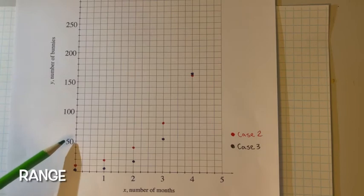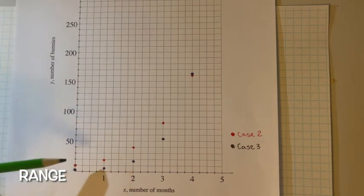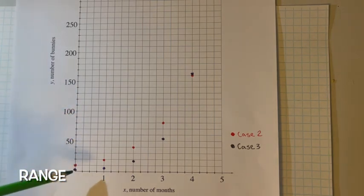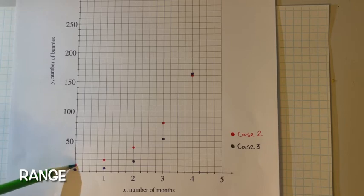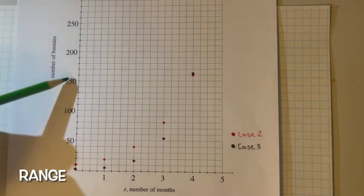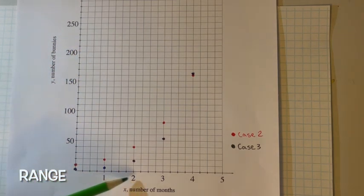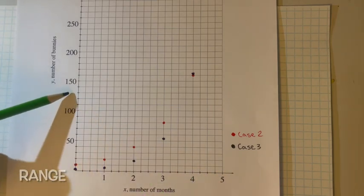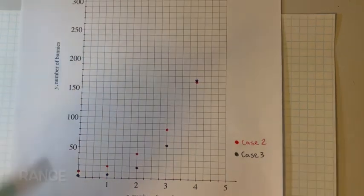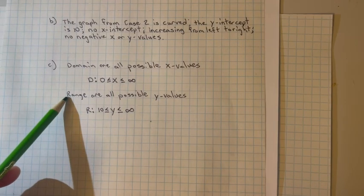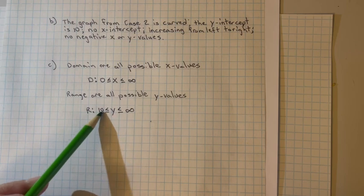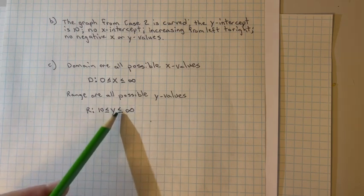The range are all possible y values. You look at the y-axis to find the range. For zero months, you have 10 bunnies. So that's the minimum. The range is y is greater than or equal to 10, and it can go infinitely on the y-axis, the number of bunnies, if you go infinitely in time. So the range is y is greater than or equal to 10, but less than or equal to infinity.